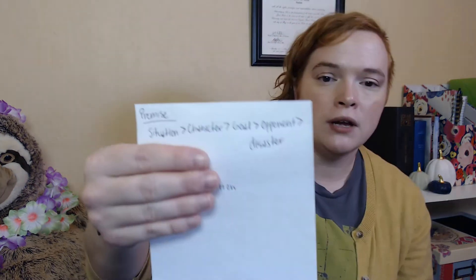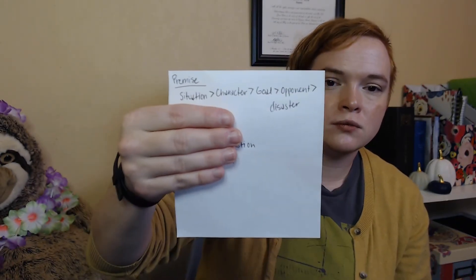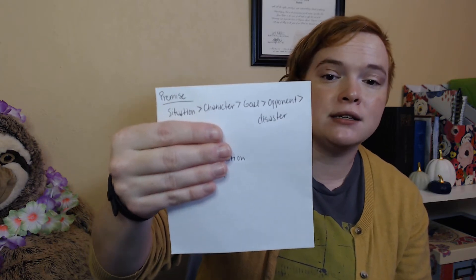Our second method is a little more complicated, but it produces a premise that is richer, fuller, and sounds more like what you would read on a book. I actually have this written down to make it easier to understand, and I'll also have it in the description below. You have: situation, character, goal, opponent, and disaster. You can see how that's way more categories than the first method, which is just 'what if character' and 'what if situation.' This is going to take more time and be more complicated. Let's use my NaNoWriMo project from last year, 2017, because that's the method I used for that premise — so I already have one written. Let's evaluate these five pieces.